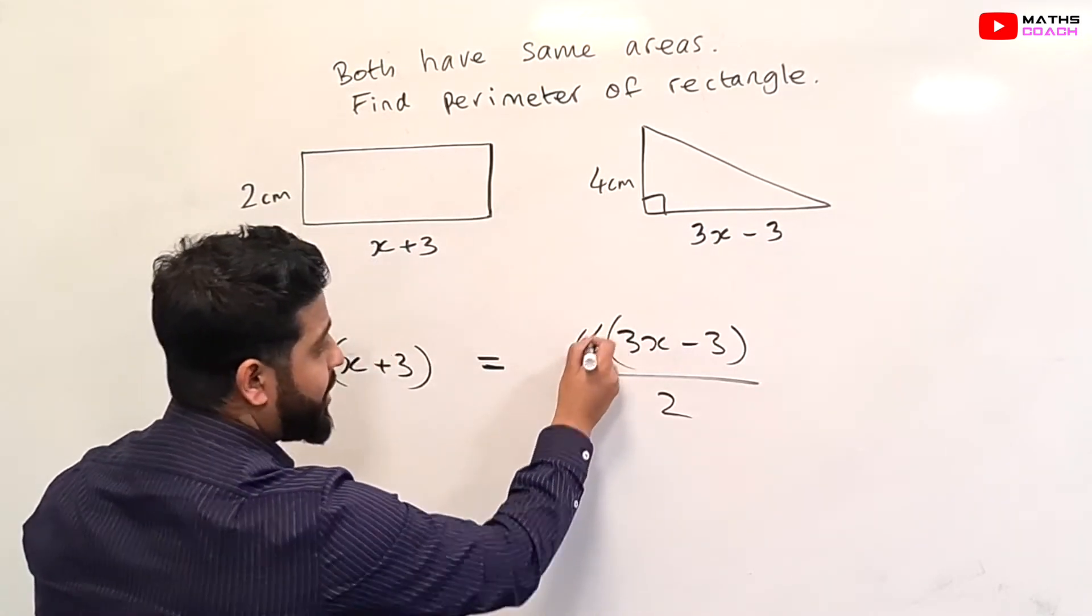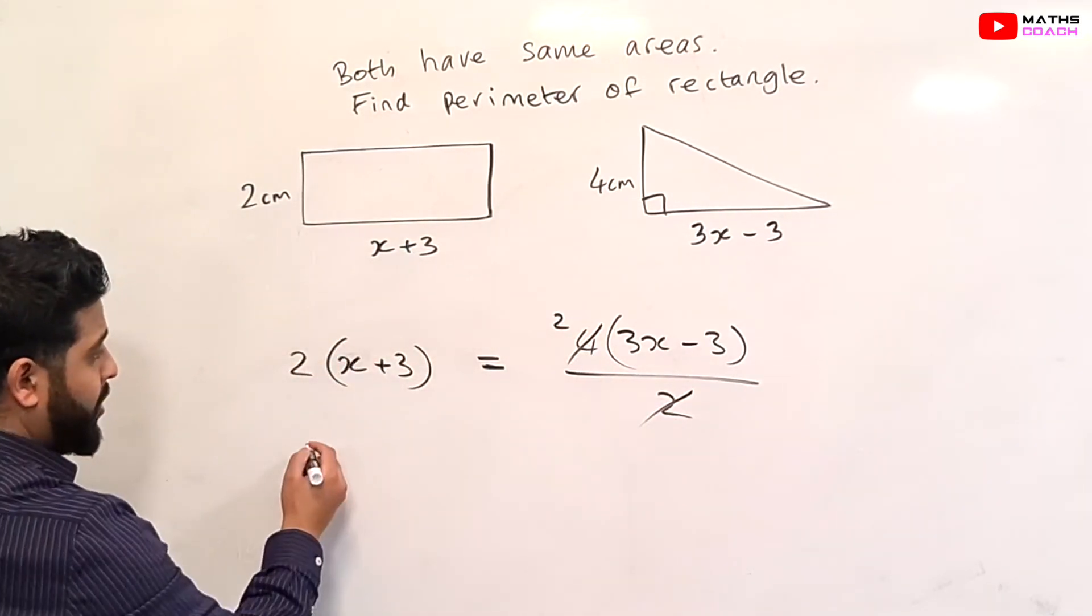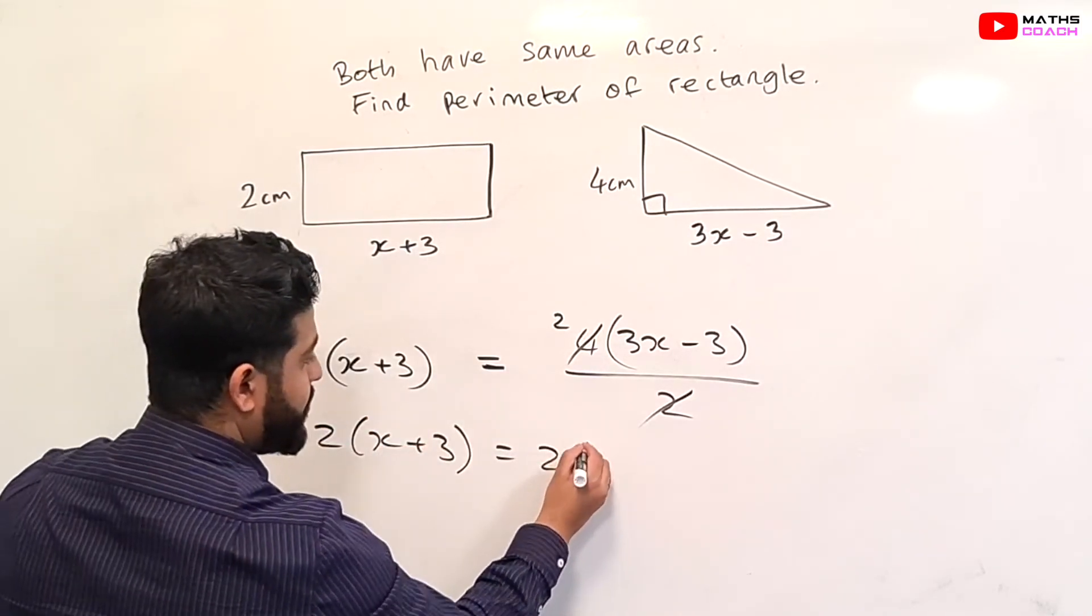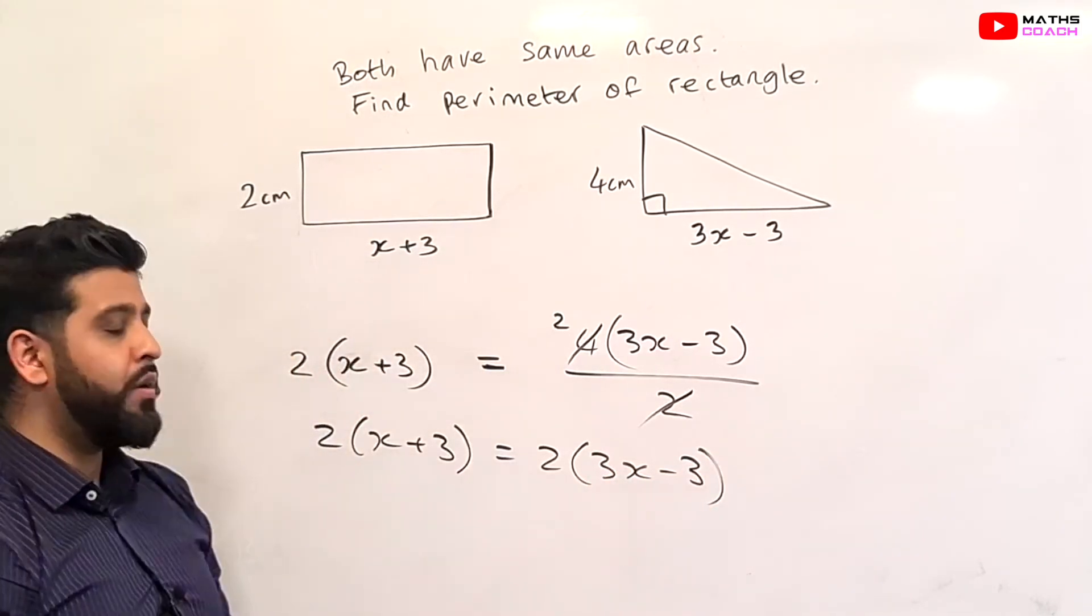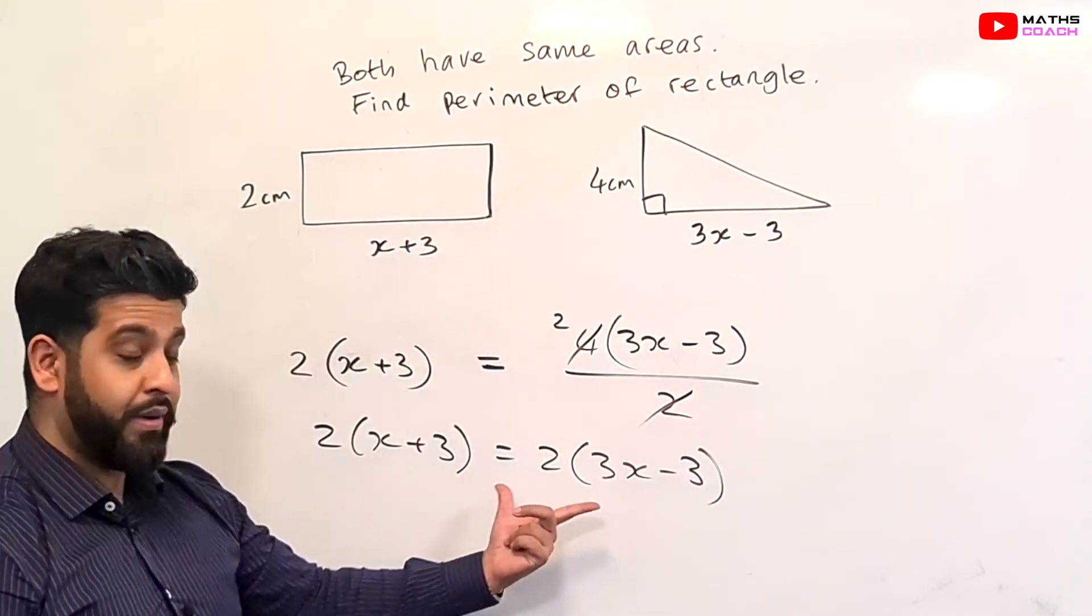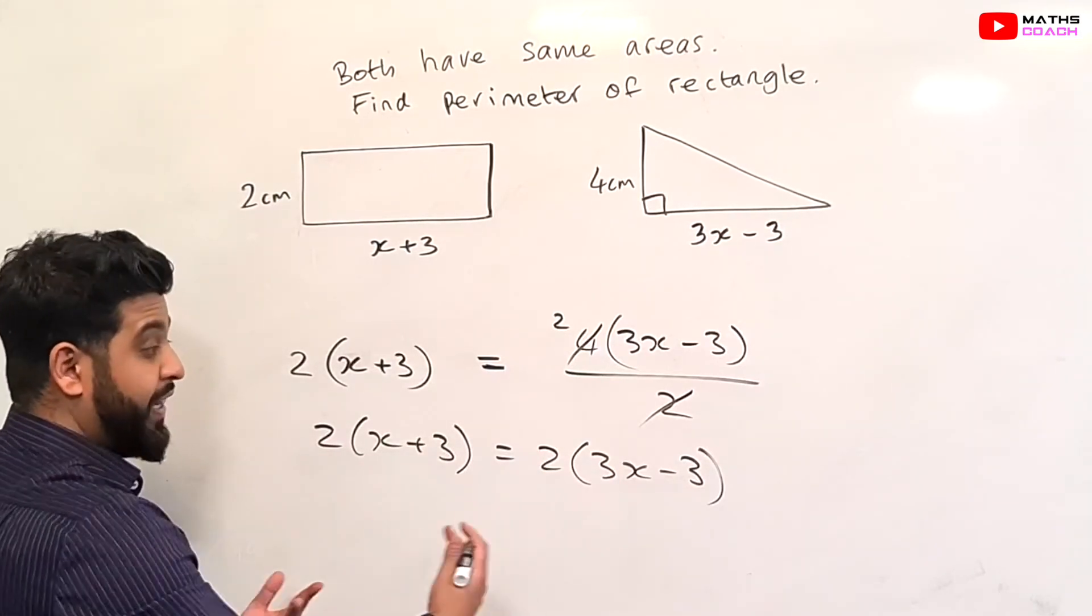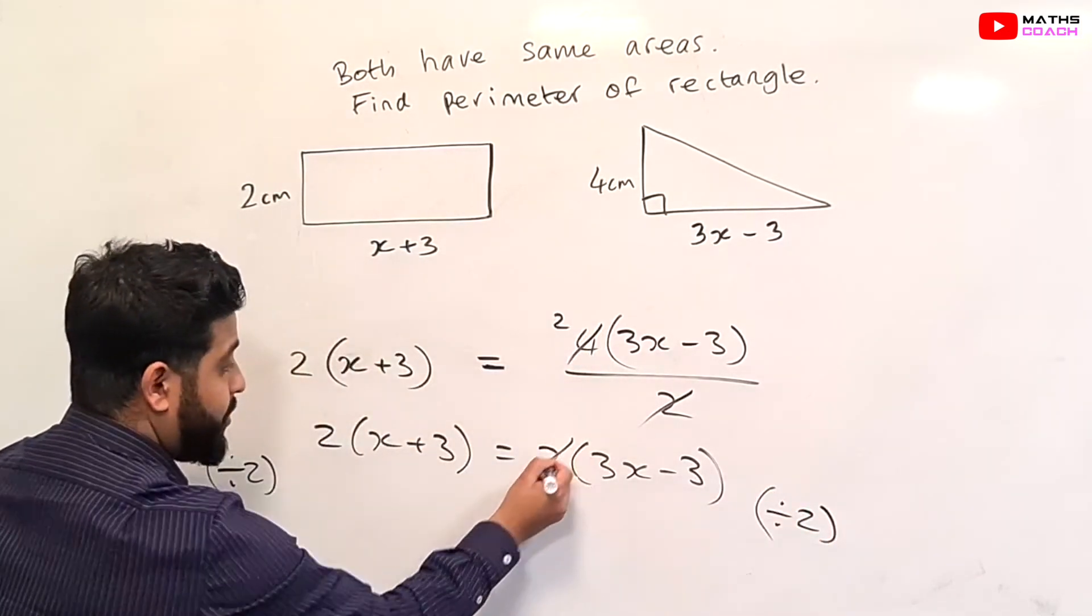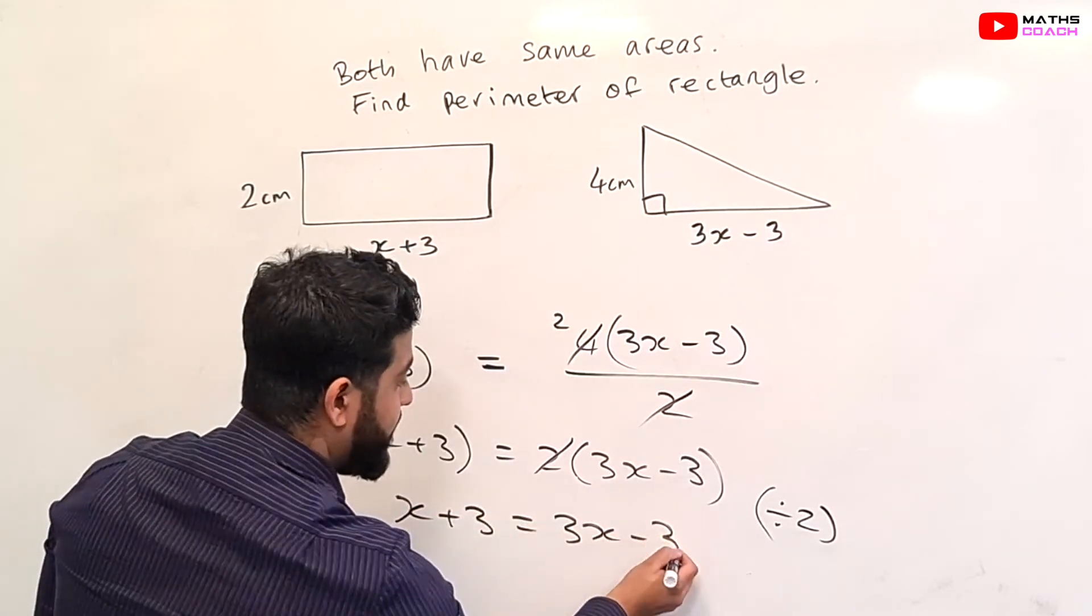Now, before we go any further, we can cancel this down. So we have 2 bracket X plus 3 equals 2 bracket 3X minus 3. How we proceed now, you can do one of two ways. You can either cancel out the 2s by dividing both sides by 2, or you can expand the bracket. It's probably easier to cancel the 2s. So if we divide by 2 here and divide by 2 here, that 2 will disappear, leaving us with X plus 3 equals 3X minus 3.